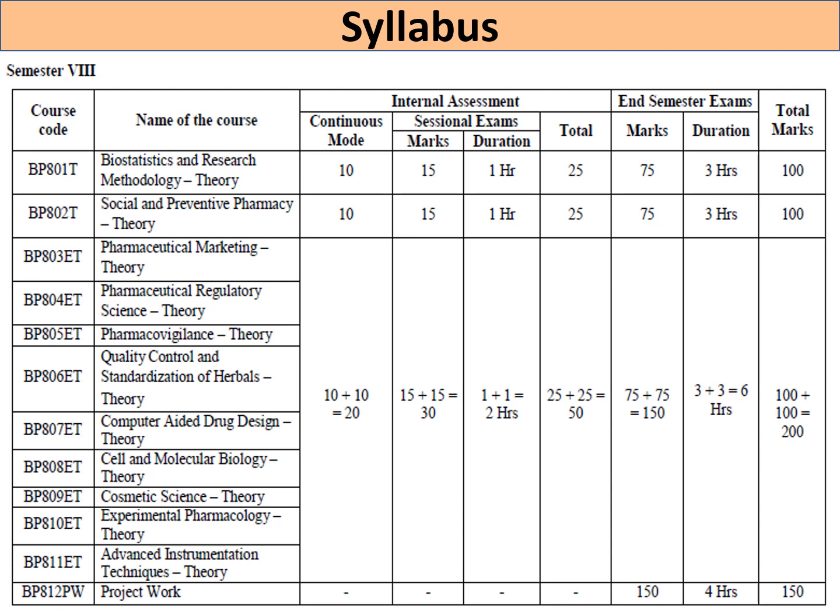The area of the project — that is, the title or topic — must come from the elective subjects. As mentioned in the syllabus, there are around nine elective subjects: Pharmaceutical Marketing, Pharmaceutical Regulatory Science, Quality Control and Standardization of Herbal Products, Computer Aided Drug Design, Cell and Molecular Biology, and Cosmetic Science.